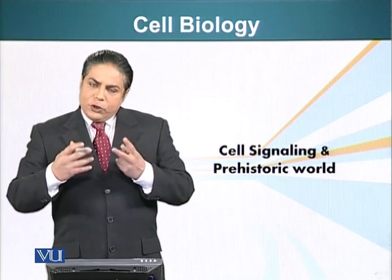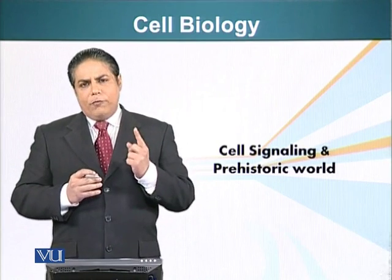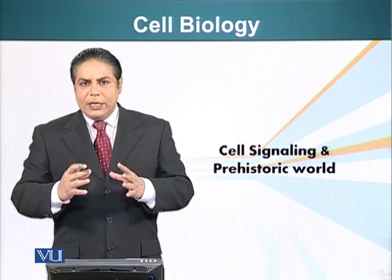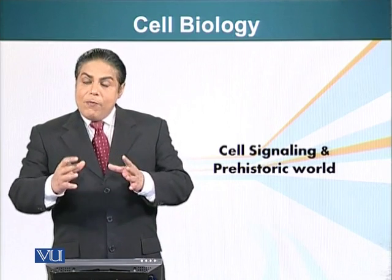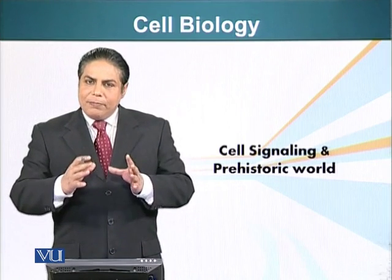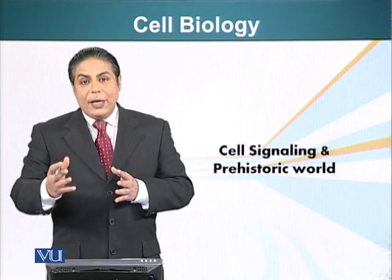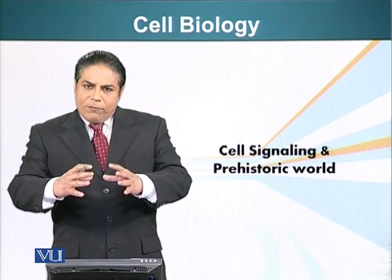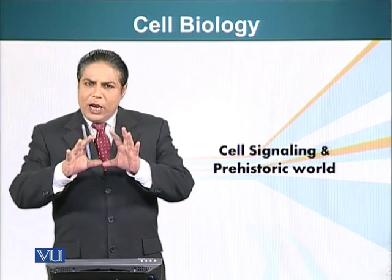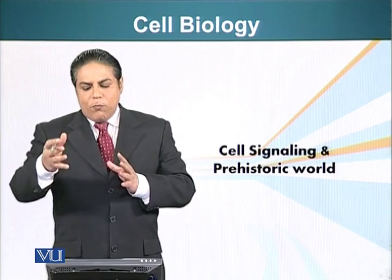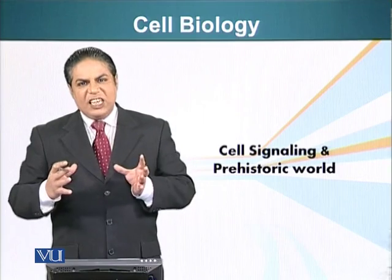The two activities required for life are: first, storage of information; second, the ability to catalyze reactions, or enzymatic activity. We know that enzymes are sensitive to physical conditions such as temperature and pH. So one of the first things cells did was develop systems to sense the environment, followed by systems that allowed them to respond to environmental changes.